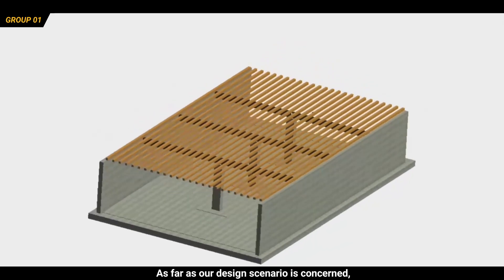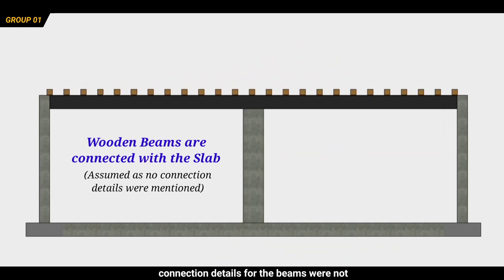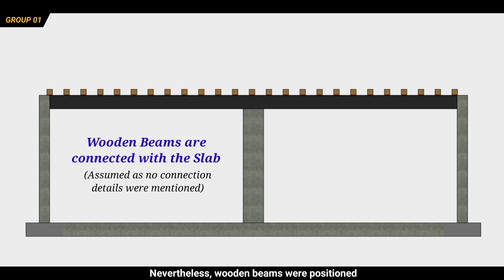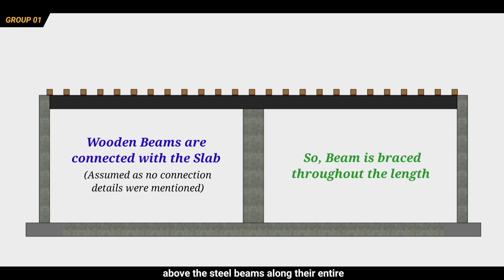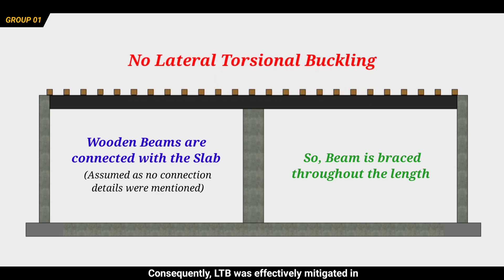As far as our design scenario is concerned, connection details for the beams were not specified. Nevertheless, wooden beams were positioned above the steel beams along their entire length. These wooden beams were connected to the concrete slab via bolts or similar fasteners. Consequently, lateral torsional buckling (LTB) was effectively mitigated in our beam design.